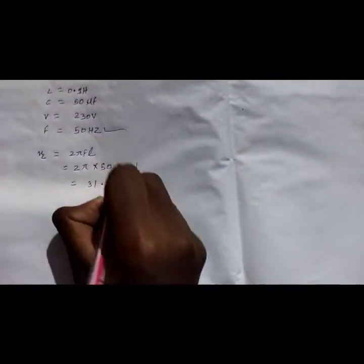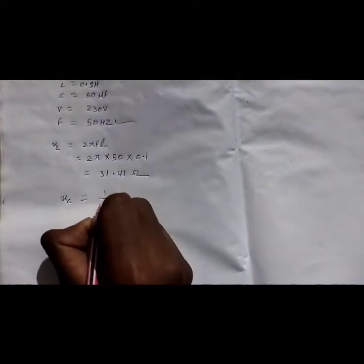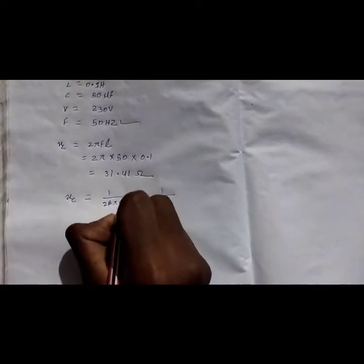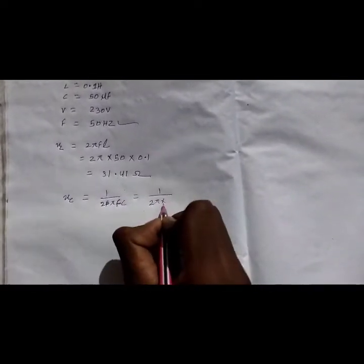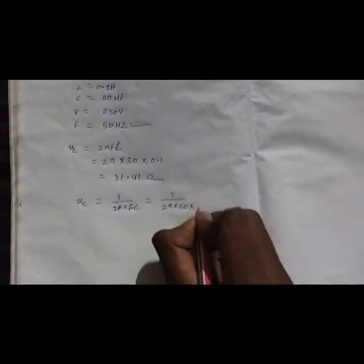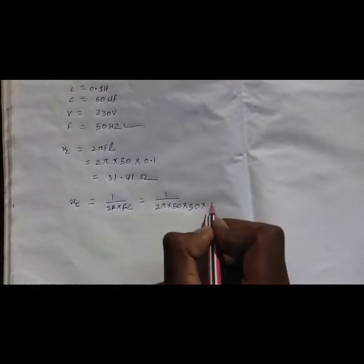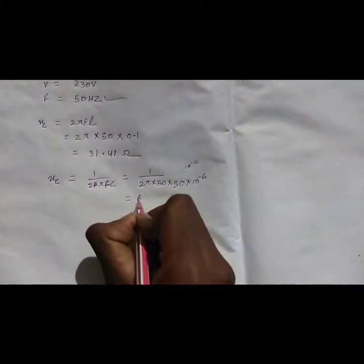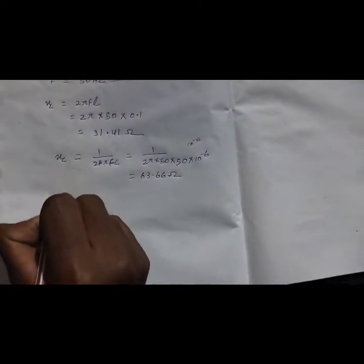Then XC = 1/(2πfC), so equal to 1 upon 2π into frequency 50 Hz into capacitance C = 50 micro faraday. We know 1 micro faraday = 10⁻⁶, so 50 micro faraday = 50 × 10⁻⁶. XC = 63.66 ohm.